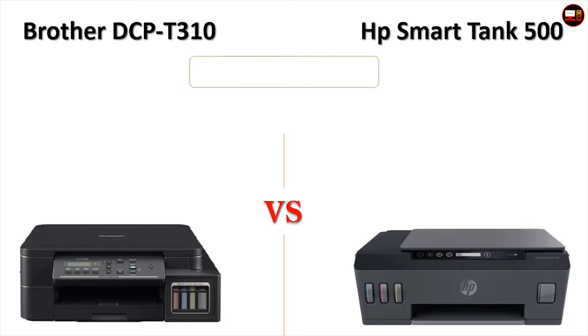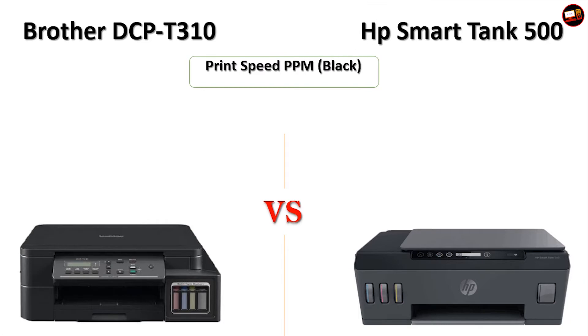Print Speed PPM, Black — Brother DCP T310: 12 PPM. HP Smart Tank 500: 11 PPM.